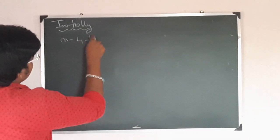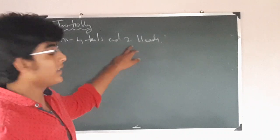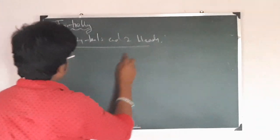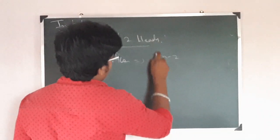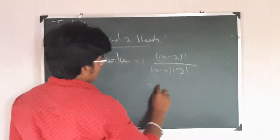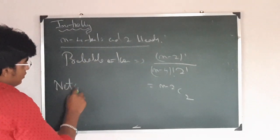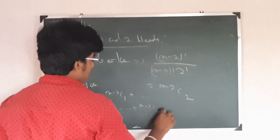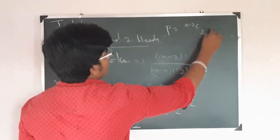We can get N minus 4 tails and 2 heads. N minus 4 tails give N minus 4 points, plus 2 heads give 4 points, so the total becomes N points. The total number of choices here is N minus 2. The probable outcome is (N-2) factorial upon (N-4) factorial times 2 factorial, which gives (N-2)C2. The net outcome is 2^(N-2). So the probability here is (N-2)C2 times 1 upon 2^(N-2).